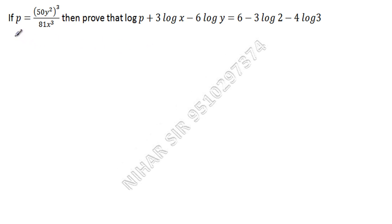Here you can see we have this information and with the help of that we need to prove these things. So we can prove this very easily. Let us say I have p equals, here I can see this is 50 cube. This is the cube of whole, so it is the cube of 50 and it is also cube of y square. So this will be y power 6 upon this will be 81 times x power cube.